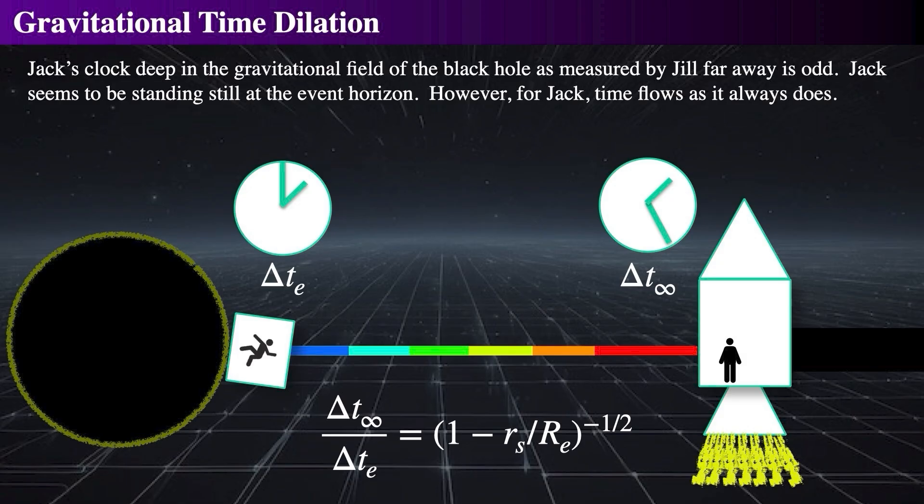As a result of this time dilation, from Jill's perspective, Jack will never seem to cross the event horizon. This is because as she measures it, his clock is slowing down more and more. If Jill could somehow view Jack and see the dim, redshifted light coming from him, she would perceive him as having stopped all movement, never actually crossing the event horizon.